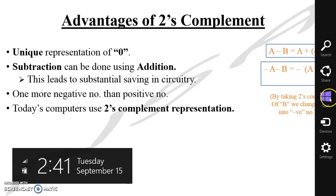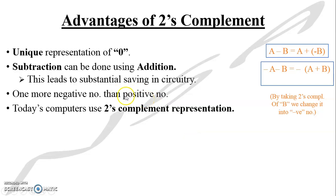There is one more negative number than positive numbers in 2's complement — we have seen this in the range. For example, with 4 bits we have minus 8. In any method, when the number of bits equals 4, if we increase the number of bits, we receive more negative numbers representable in 2's complement. Today, computers use the 2's complement representation.